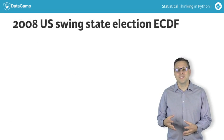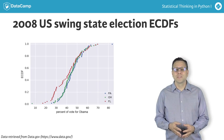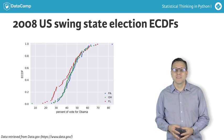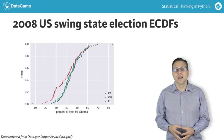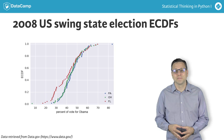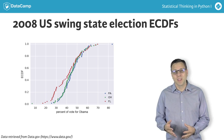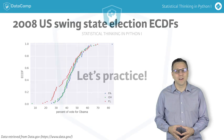The result is the beautiful ECDF I just showed you. You can also easily plot multiple ECDFs on the same plot. For example, here are the ECDFs for the three swing states. We see that Ohio and Pennsylvania are similar, with Pennsylvania having slightly more Democratic counties. Florida, on the other hand, had a greater fraction of heavily Republican counties. In my workflow, I almost always plot the ECDF first. It shows all the data and gives a complete picture of how the data are distributed.